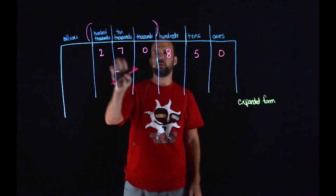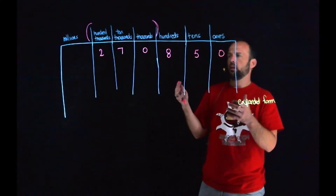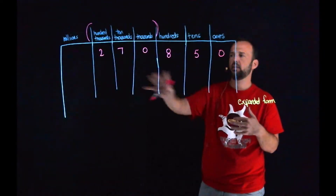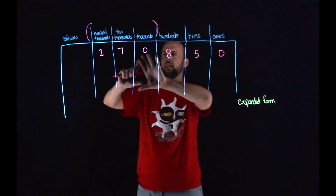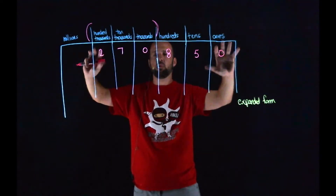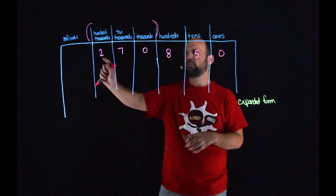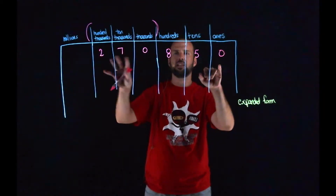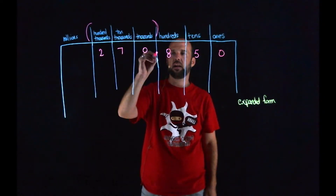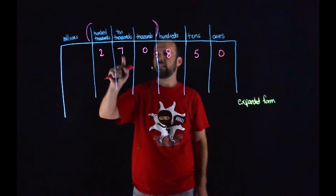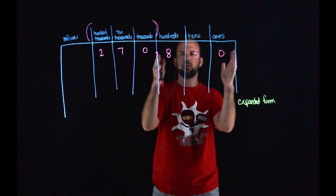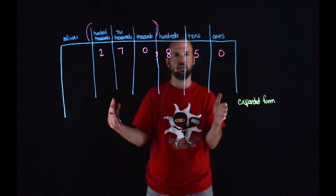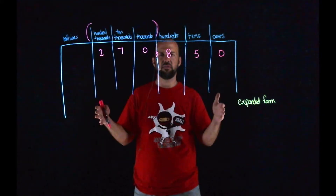Let's build on this a little bit more and take a look at another number. In this place value chart I have a new number. I want you to look at this number and read it out loud — to your learning guide, your cat, a neighbor, call up a friend, whatever you need to do. So we have 270,850. That's how we would read it out loud, and that's where the comma would be at the end of that period. Take a second in your place value chart and write the values of each digit according to its place value so we can work on the expanded form.